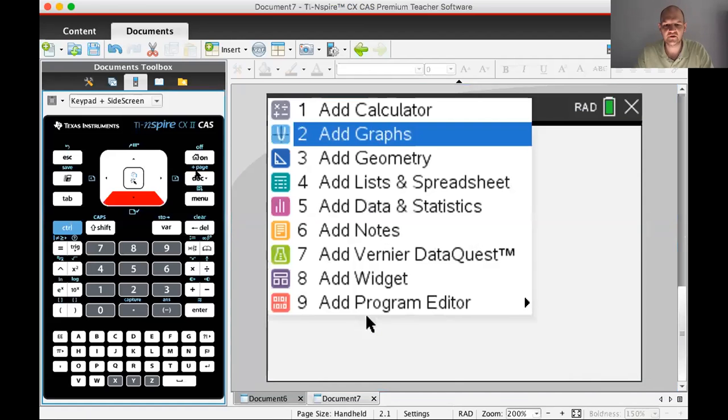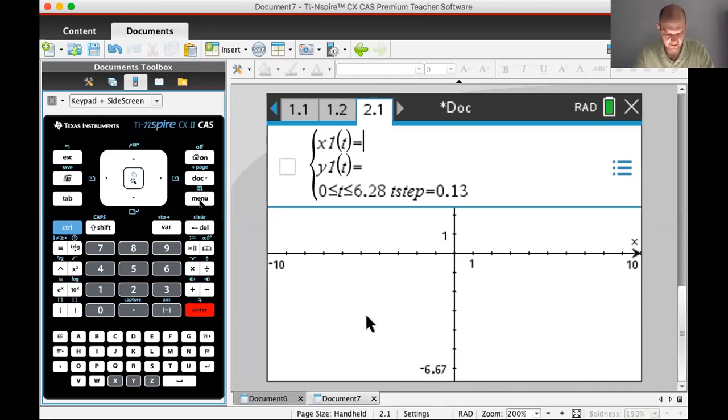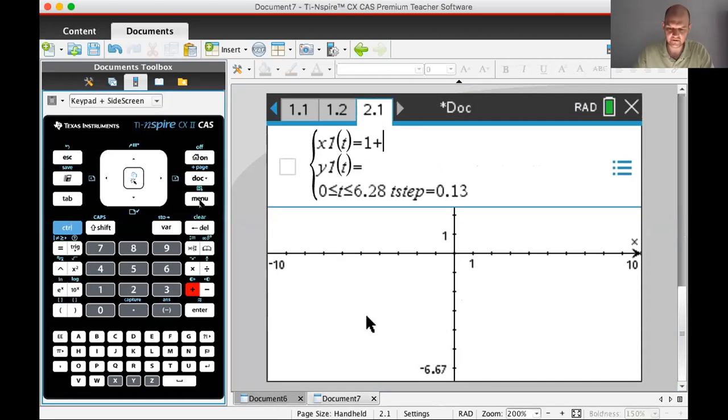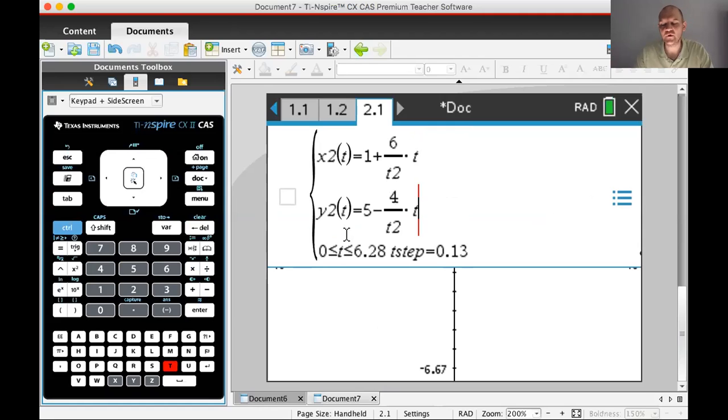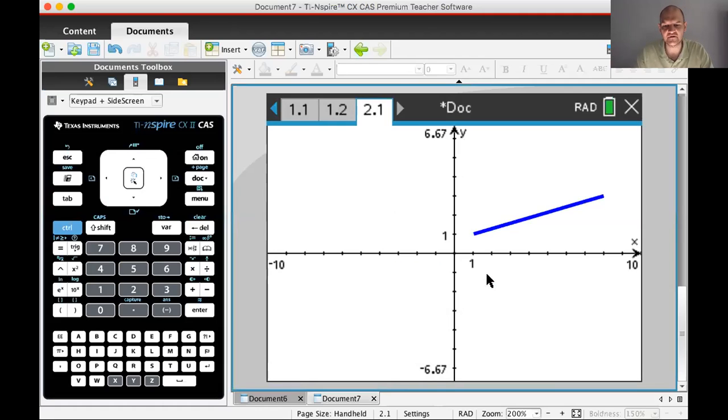I'm going to insert a new problem, graph page, change it to parametric so I can just type these in. 8 minus 7 over 10 T and 3 minus 2 over 10 T. So there's definitely a twist in this problem. This is a little bit different from problems we've done before, because of the not getting to the intersection at the same time. I'm going to use a fraction template, T2 times T, and then 5 minus 4 over T2 times T. We don't know what T2 is.